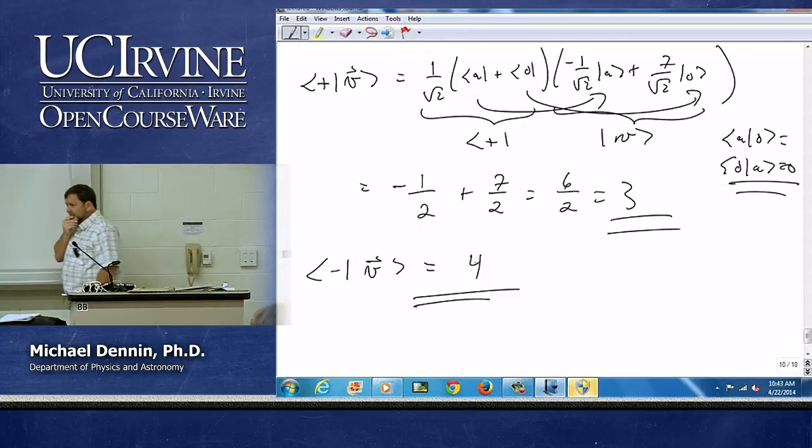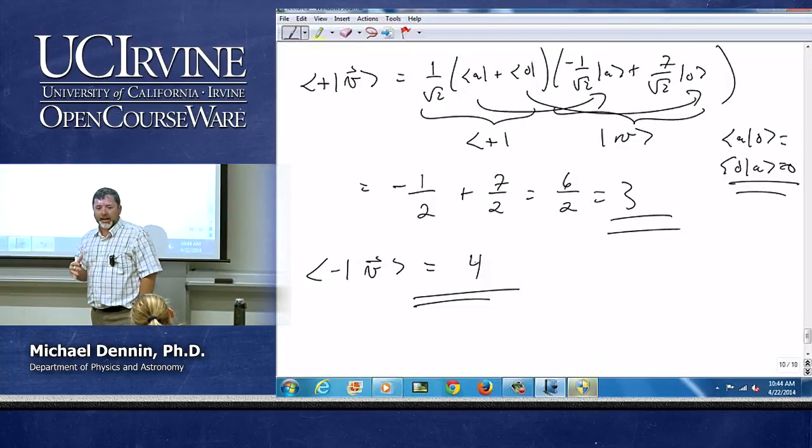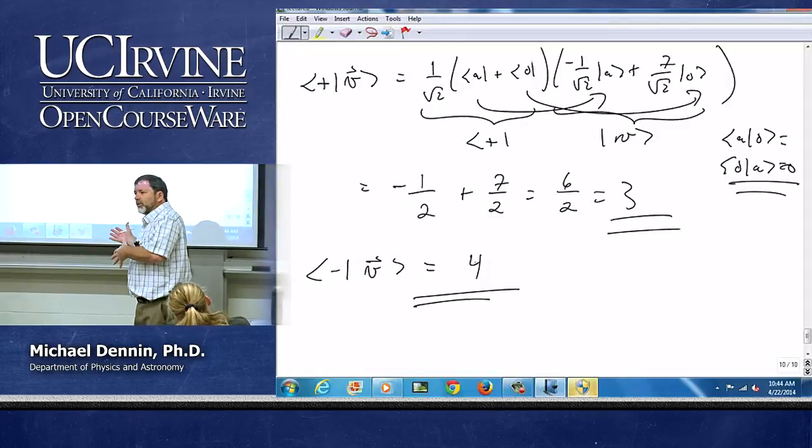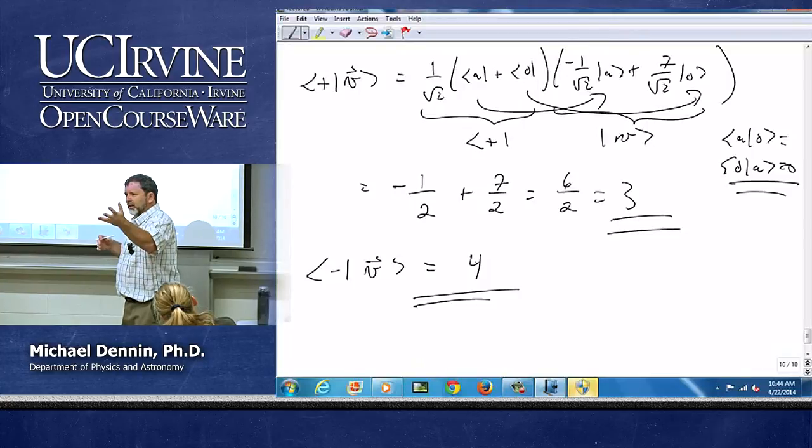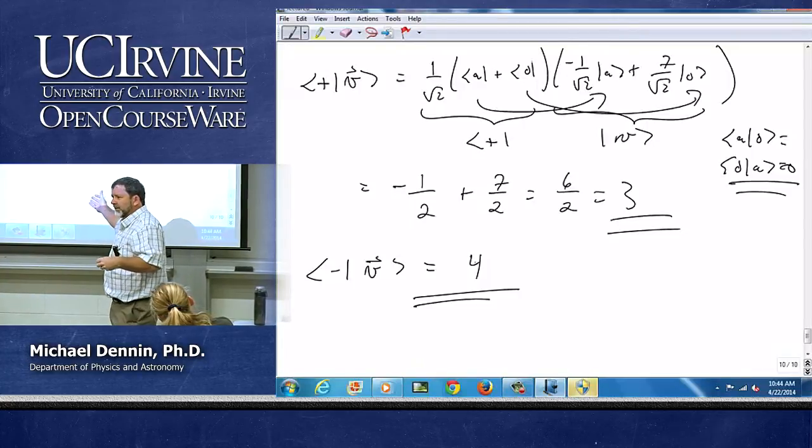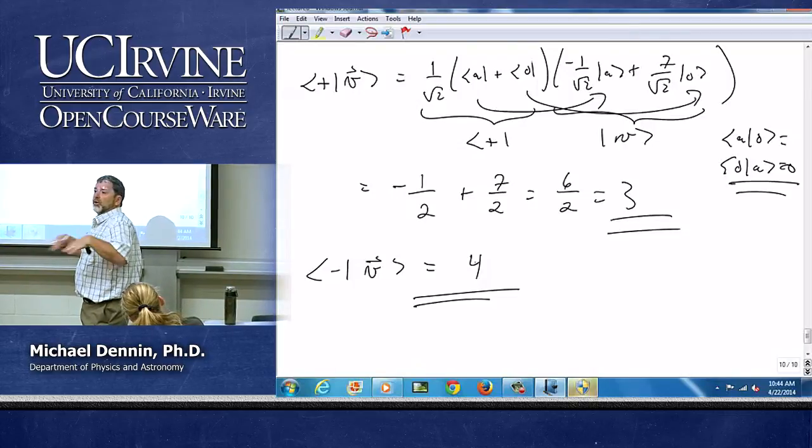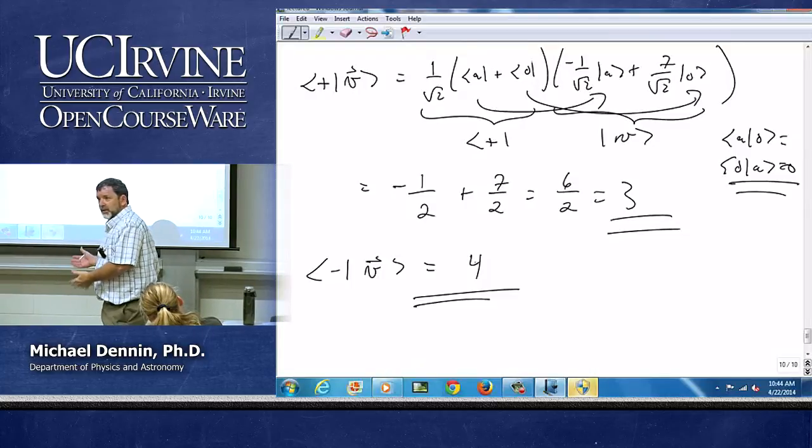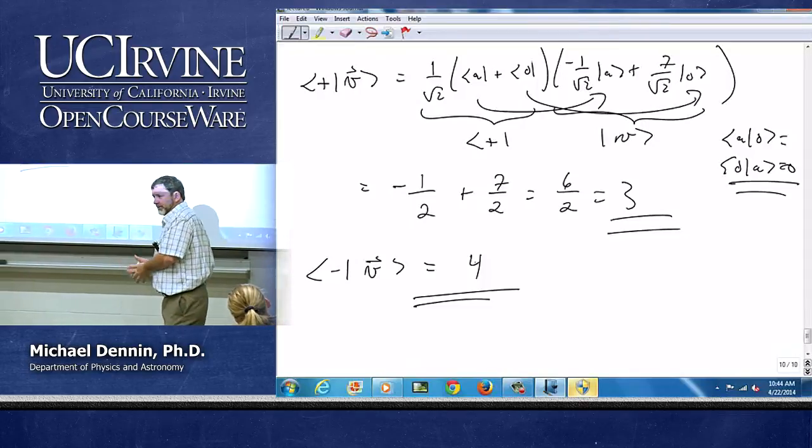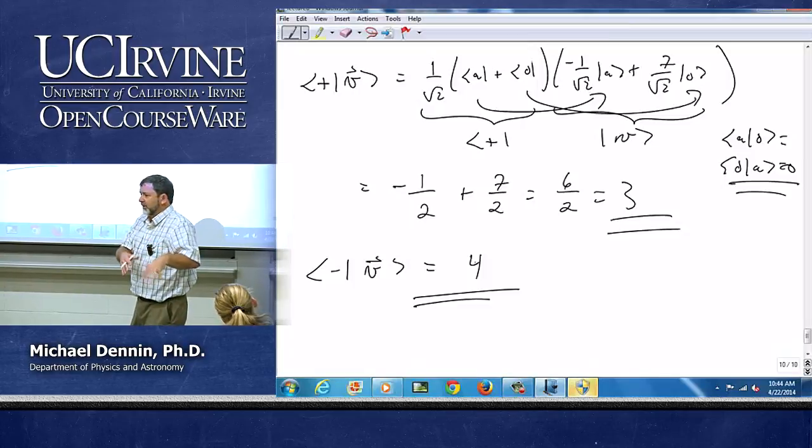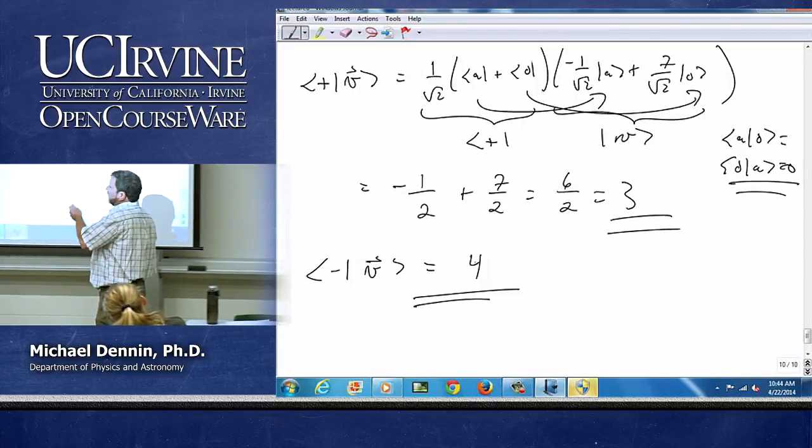So an important question you might want to ask yourself is when do I use projection and when do I use the change of basis matrix? And my suggestion to you, for instance, if you just need a single component, projection is usually easier. Because it's obvious. If I have the vector V and I have some other vector Q that I want the component in that direction, I just project.